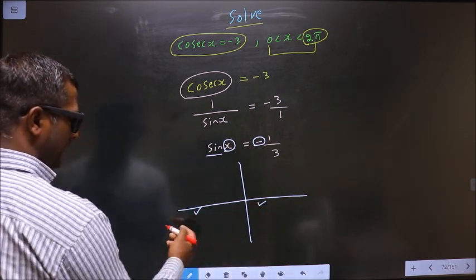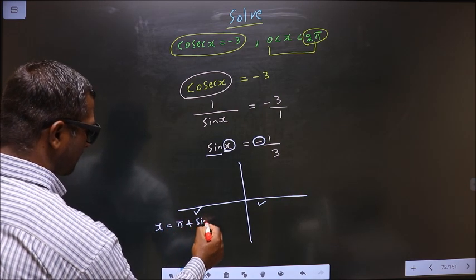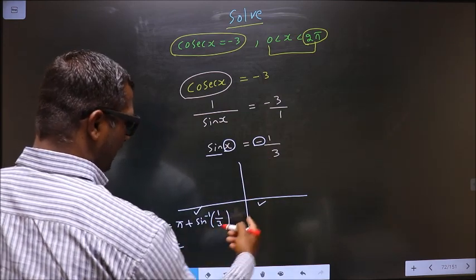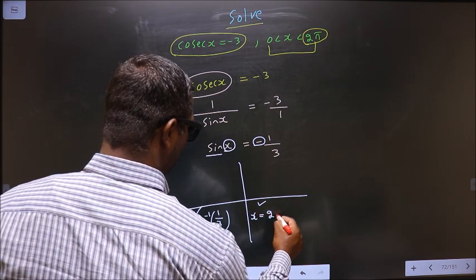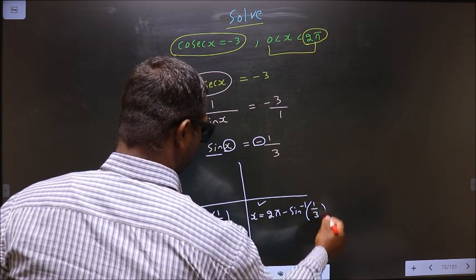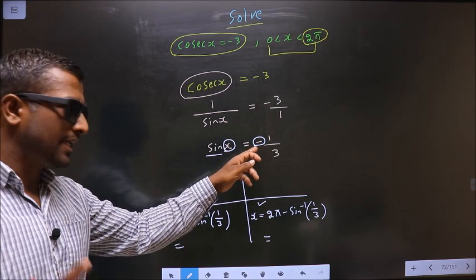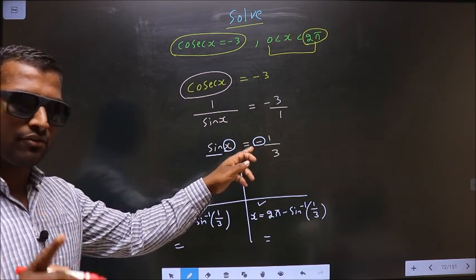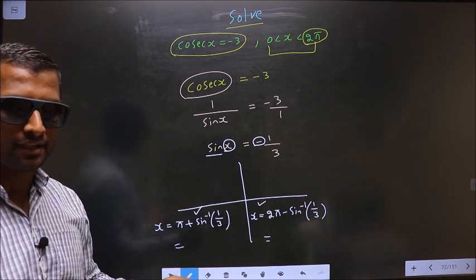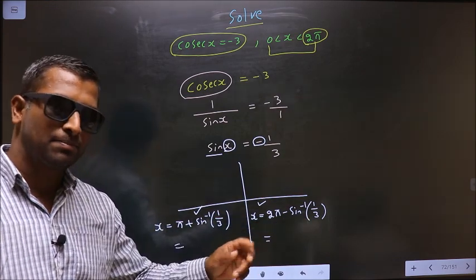Now to get an angle in the third quadrant we should do π plus sin inverse 1 by 3. To get an angle in the fourth quadrant we should do 2π minus sin inverse 1 by 3. Remember this: the negative sign is used only for selecting the quadrants. Once quadrants are selected, do not place negative sign here.